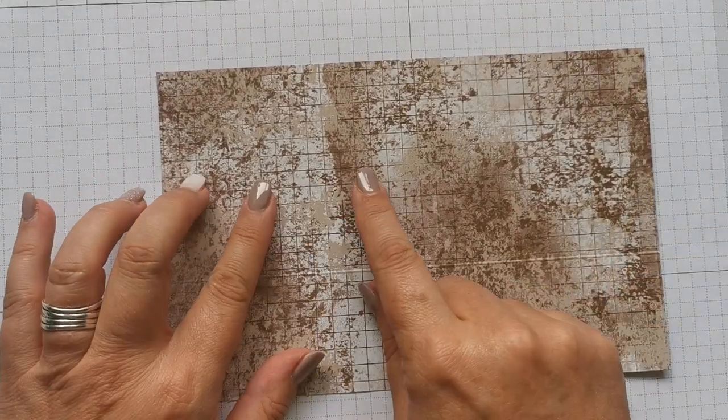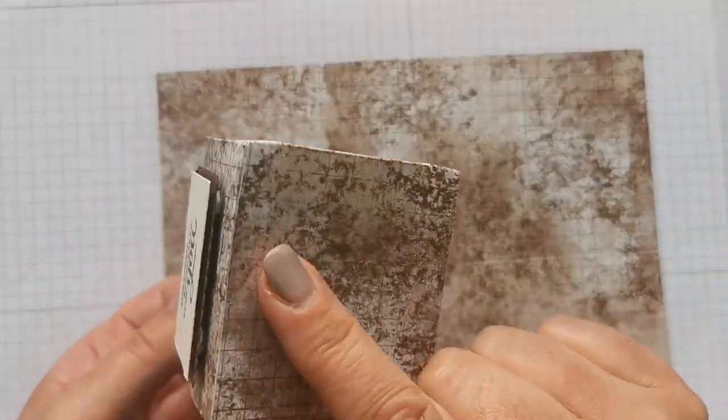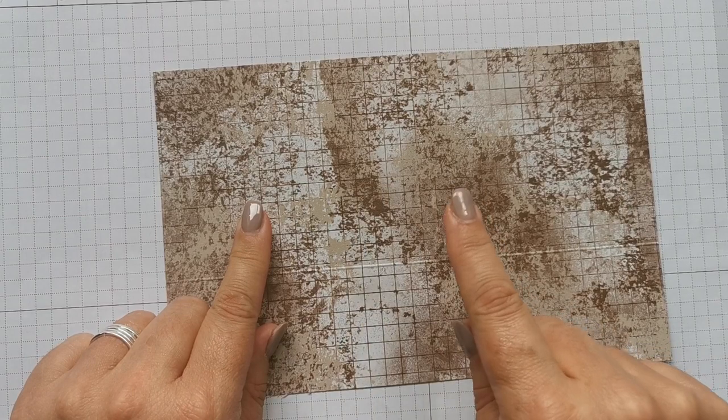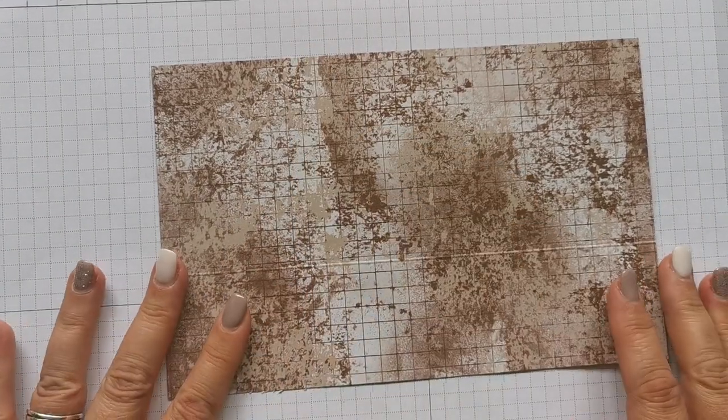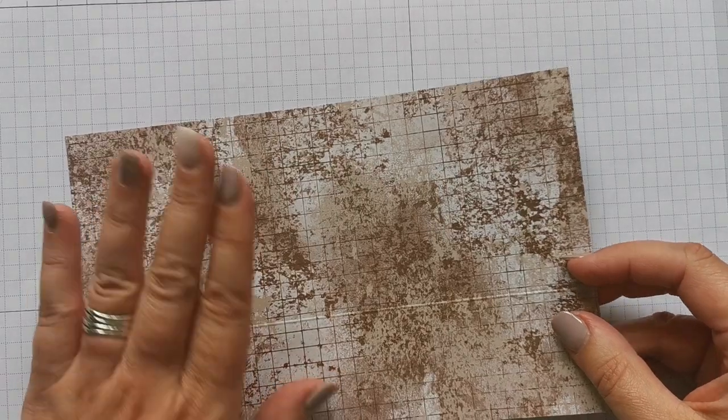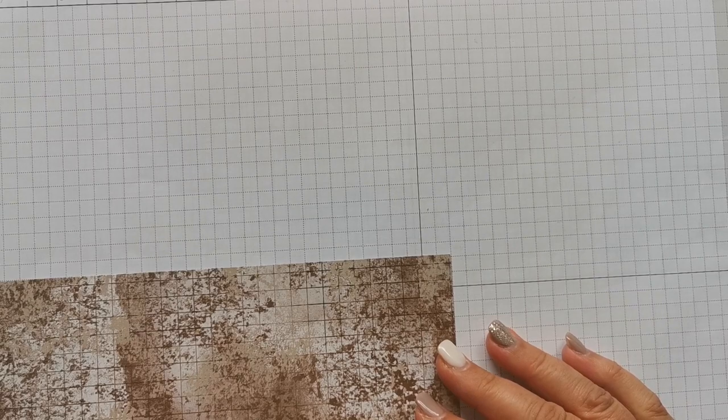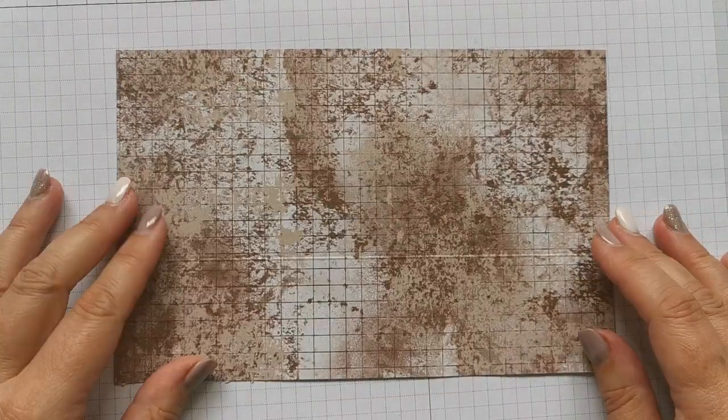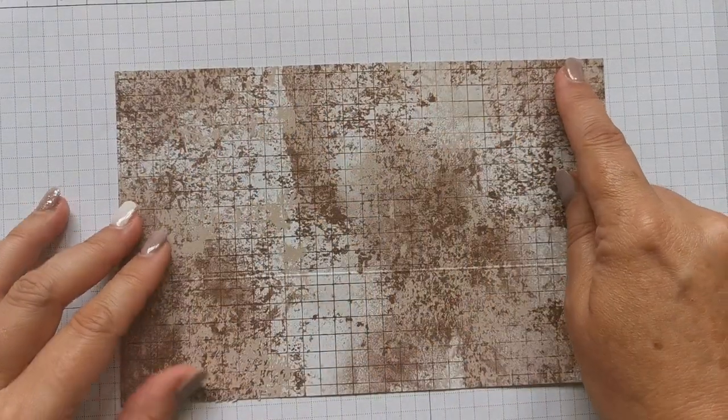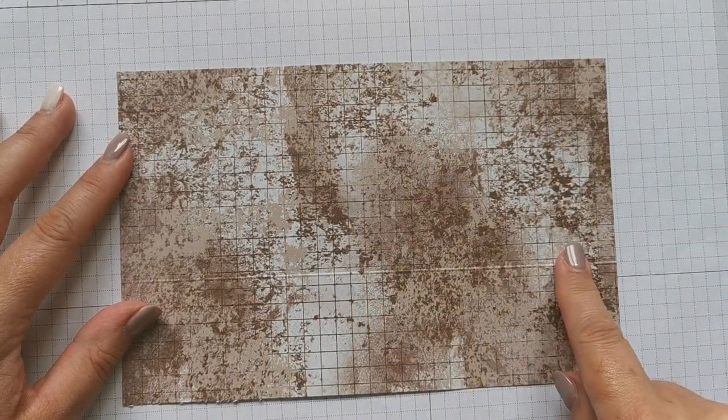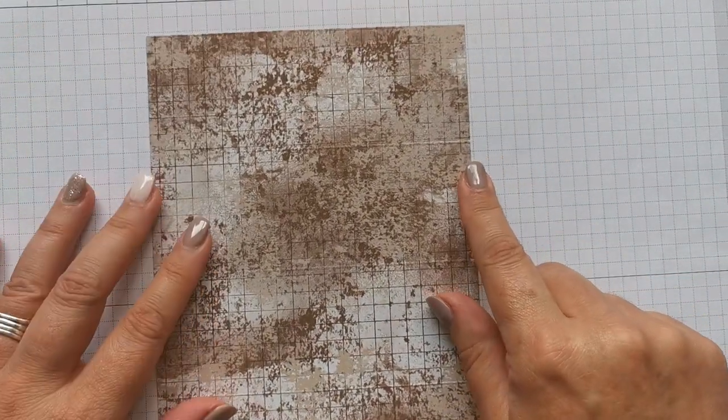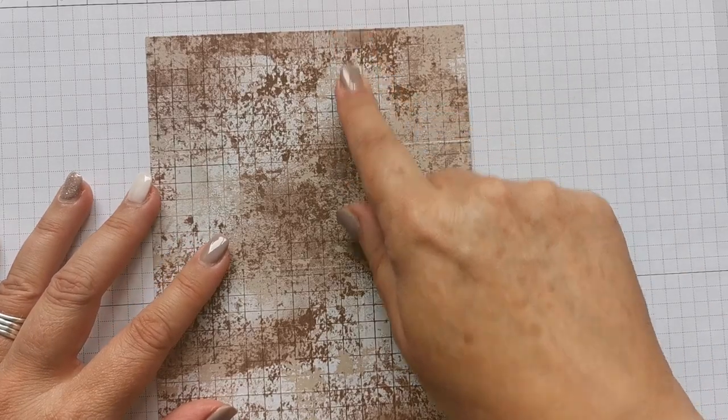So this is going to be a box. This is two and a half inches square. This box is going to be two inches square and it's going to be three and a half inches high. So I've got a piece of DSP and this measures five and a half inches by eight and a half inches. And then along the long side, I've scored at two, four, six and eight. And then on the short side, I've scored at three and a half.